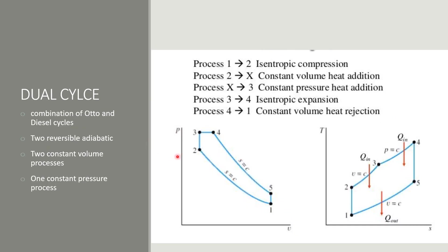Then we have the dual cycle. In the dual cycle, it is the combination of both the Otto and diesel cycles. Firstly, we have an isentropic compression 1 to 2, then we have a constant volume heat addition process, and 3 to 4 is also a heat addition isobaric process. Finally, we have an isentropic expansion 4 to 5, and then an exhaust process that is 5 to 1.